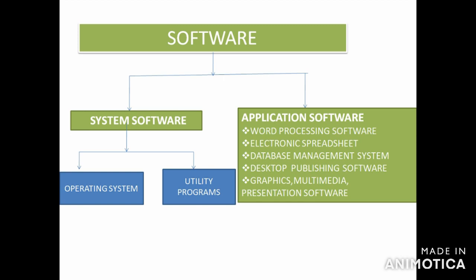System software is of two types: the operating system and utility programs. The operating system operates the computer system and controls its overall activity. It acts as a link between the user and the hardware, managing how the user and computer interact — for example, when you use the keyboard, the operating system conveys the message so both the user and the computer are ready to work.